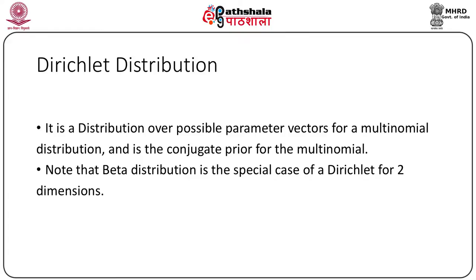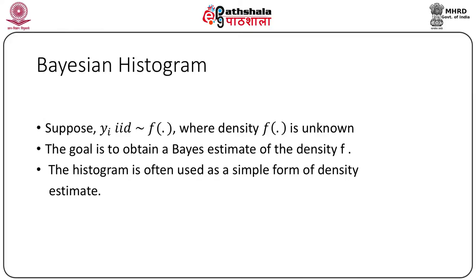The beta distribution is a special case of a Dirichlet for two dimensions, that is when m equals 2. We can draw something called a Bayesian histogram. Suppose y_i are i.i.d. with density f, where f is unknown. The goal is to obtain a Bayesian estimate of the density f. The histogram is often used as a simple form of density estimate.